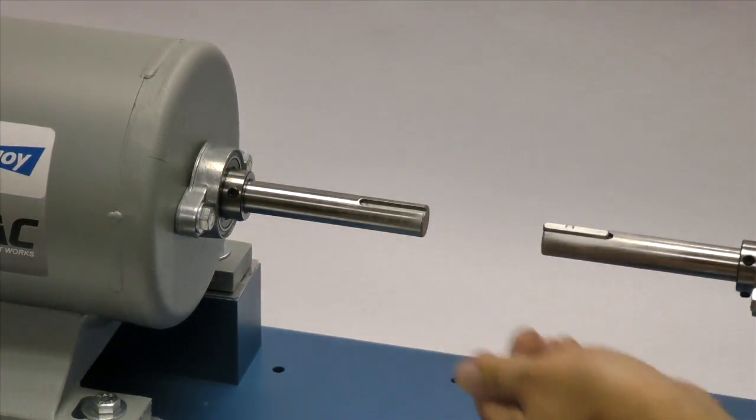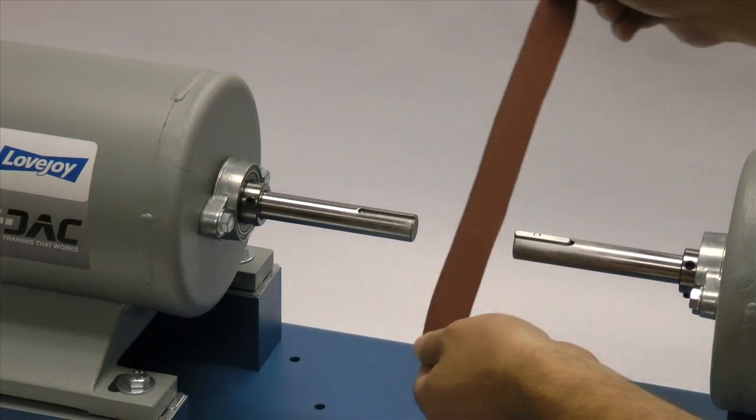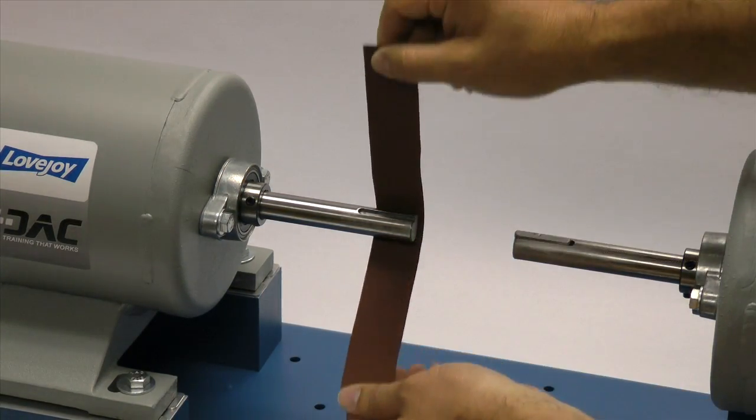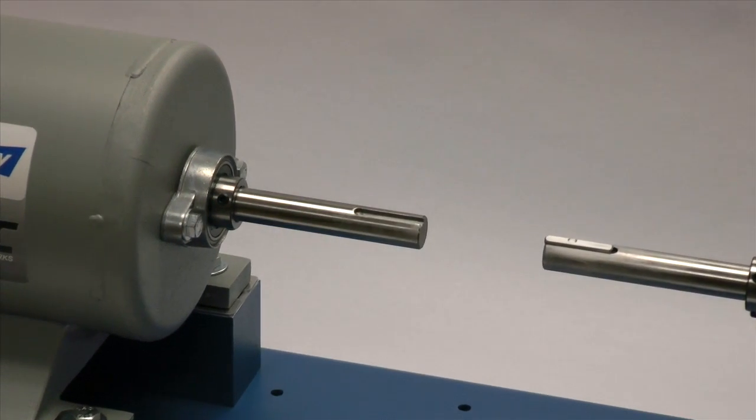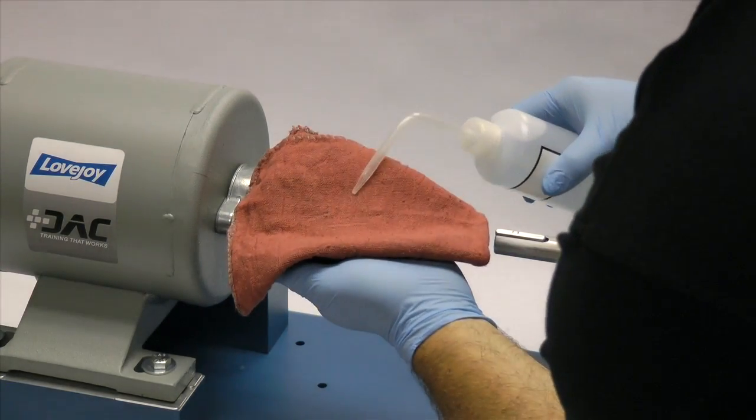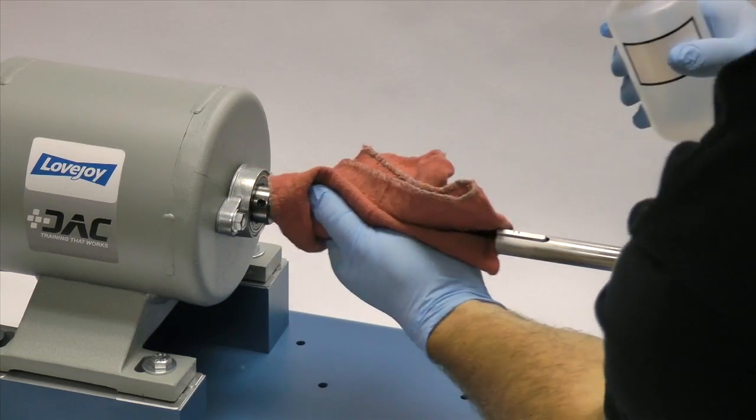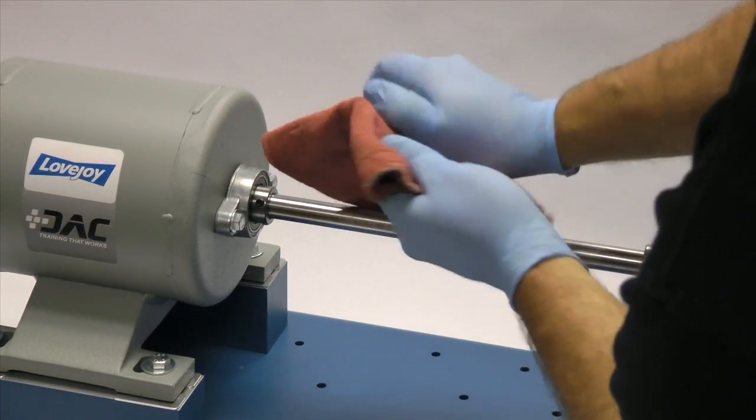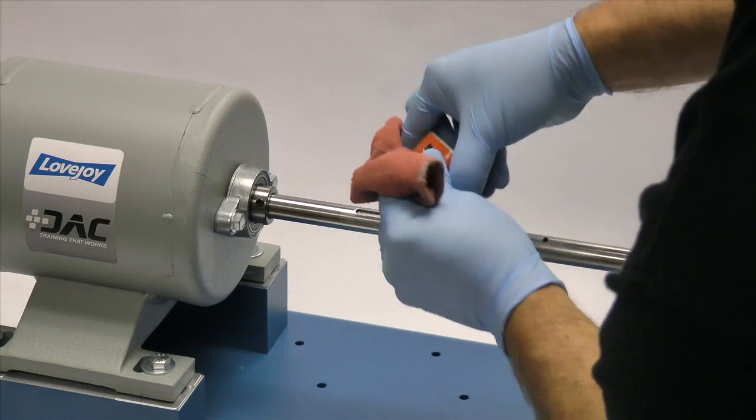A fine tooth file can be used to clean burrs from the edge of the keyway or large dents in the shaft. The emery paper can be used to clear the shaft of rust or any fretting corrosion. Finally, using our cloth and cleaning solvent, we need to ensure the surface of the shaft and the keyway are clean and free of dirt. The hub should also be cleaned to remove any coatings used to protect them during shipping.